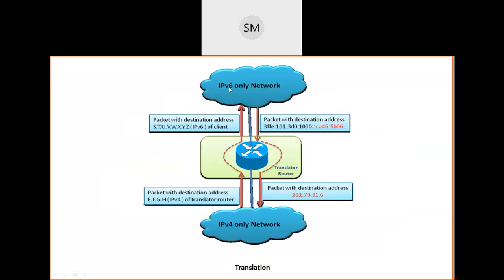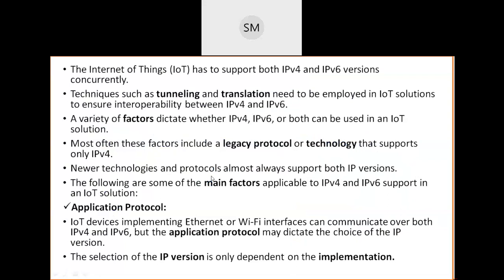Translation works differently. If you have an IPv4 network and an IPv6 network wanting to communicate, a translator sits between them. IPv4 addresses look different from IPv6 addresses. The translator converts IPv4 data to IPv6 when sending to the IPv6 network, and converts IPv6 data back to IPv4 when communicating the other way. These two techniques — tunneling and translation — address the IPv4/IPv6 coexistence problem.